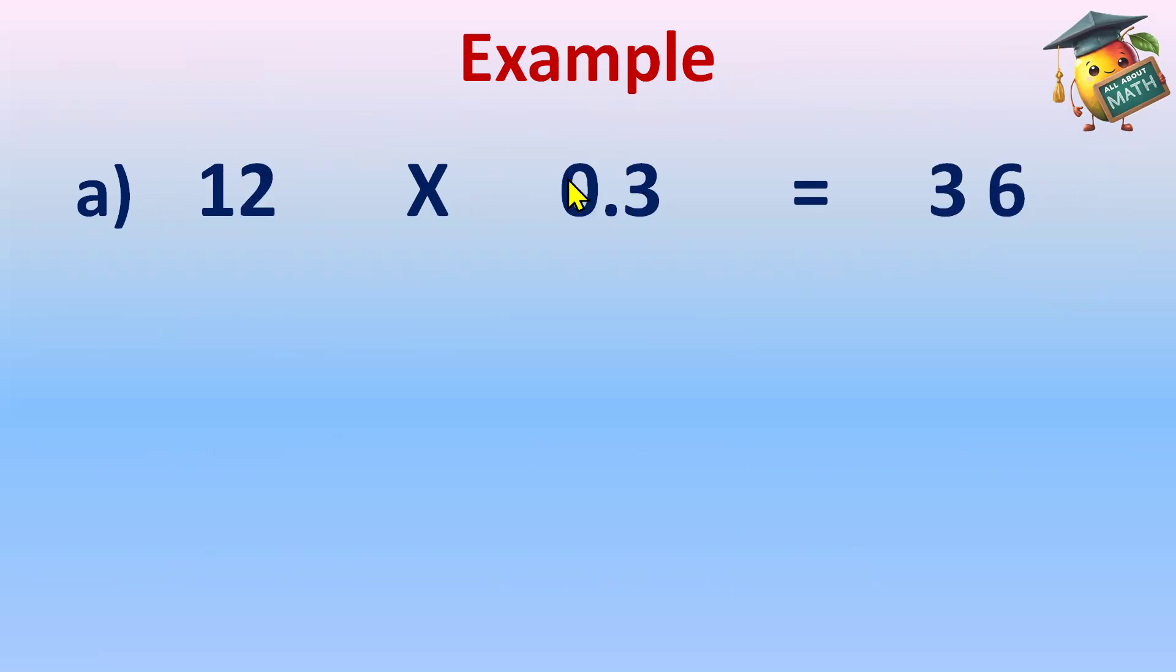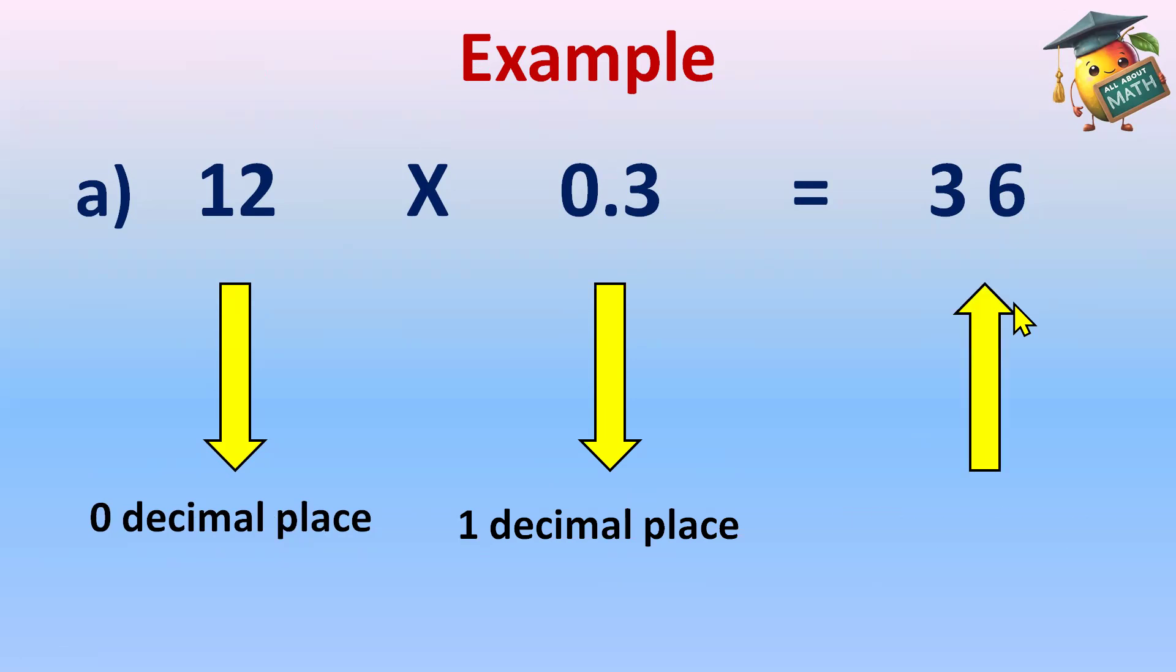Count the decimal places in the question. 12 has 0 decimal place. 0.3 after decimal has only one digit, so one decimal place. And in total, we have 0 plus 1, one decimal place. In answer, write down the decimal place after one digit. So answer is 3.6.